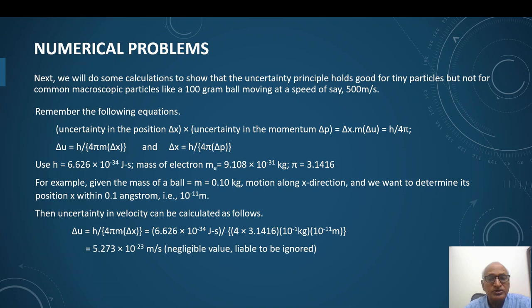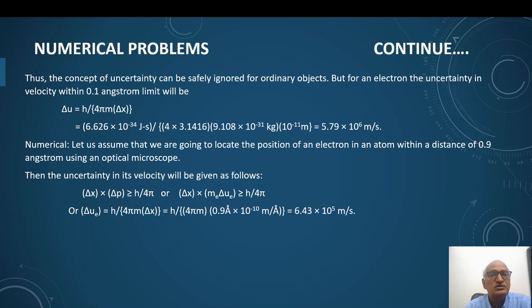In the next calculation, we will show for tiny particles like electron, which is very much valid. Here we applied the same principle for determining the uncertainty in the velocity of an electron, which we wanted to locate within one angstrom distance. When we put the relevant data and carry our calculations, we find that uncertainty in velocity is 5.79 × 10^6 meter per second. This cannot be ignored, it's a significant figure.